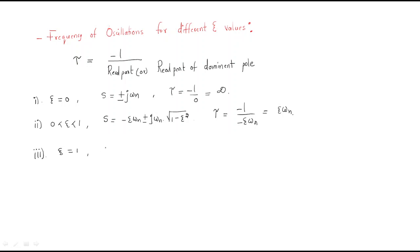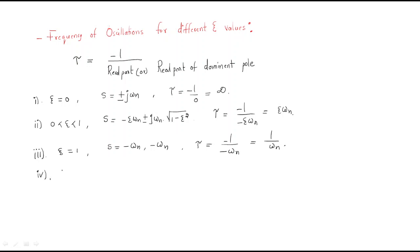The third case is critically damped, meaning zeta equals one. We have two poles, both equal to minus omega n. The time constant tau equals minus 1 divided by minus omega n, so we have time constant equal to 1 by omega n.